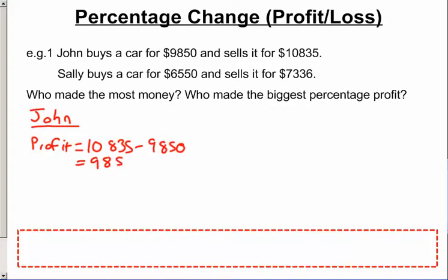So he made $985. For Sally, her profit was, well she sold it for $7,336 and she bought it for $6,550. So her profit was one minus the other and that is $786.